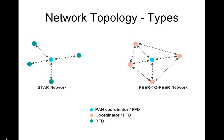Depending on application requirements, a WPAN may operate in either of two topologies: the star topology or the peer-to-peer topology, both shown in the figure. In star topology, communication is established between devices and a single central controller called the PAN coordinator. A device typically has some associated application and is either the initiation point or the termination point of network communications.